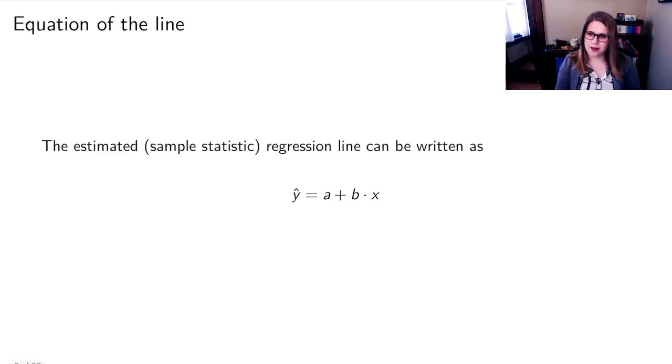So as with everything in this class, we have a population parameter version of our statistics, and we have a sample statistic version. We're going to focus on the sample statistic version, the one that we calculate from our actual data. And the way that we would write out that regression line would be y hat. So this is y hat, I put the little hat over it to mean that it is estimated or predicted. And then a is my intercept, and b is my slope, and x is my explanatory variable.